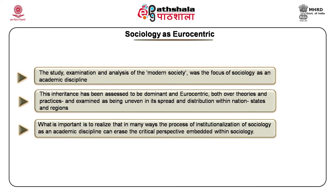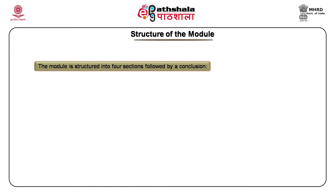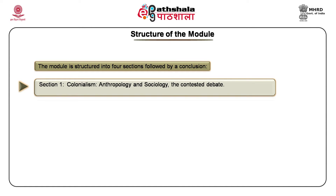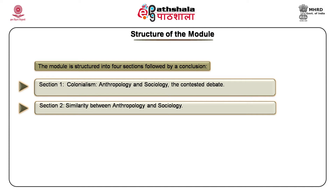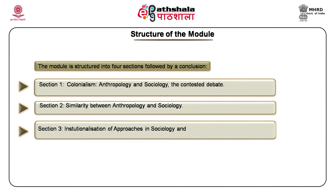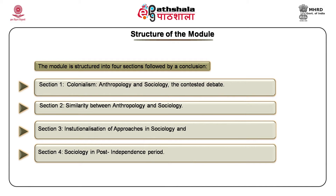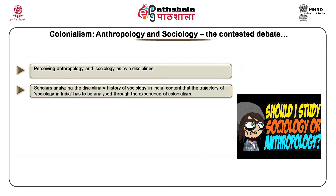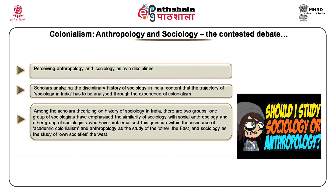The module will focus on writings of scholars who have intervened to discuss the institutional history of sociology in India. It will include an analysis of three interlinked issues: one, the debate on social anthropology and sociology; two, diversity of approaches towards society in India; and three, what kind of sociologies would sociologists in India practice? This module is structured into four sections: one, colonialism, anthropology, sociology — the contested debate; two, similarity between anthropology and sociology; three, institutionalization of approaches in sociology; and four, sociology in the post-independence period. The major debate structuring the perception towards sociology in India is the relationship between anthropology and sociology, especially in the context of the nature and stated goal of the disciplines themselves.